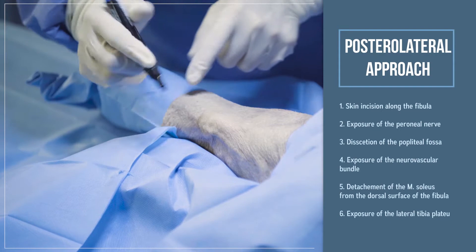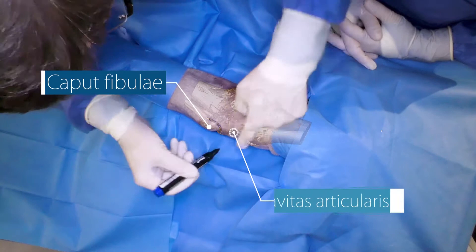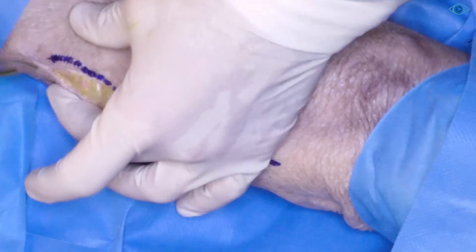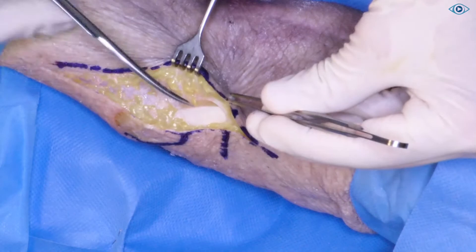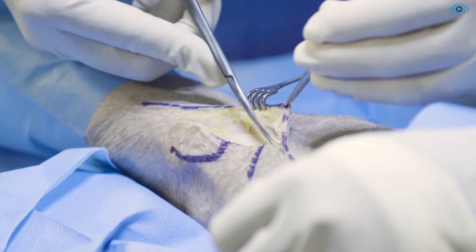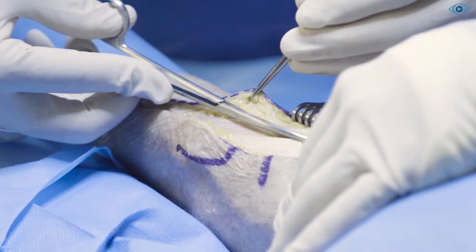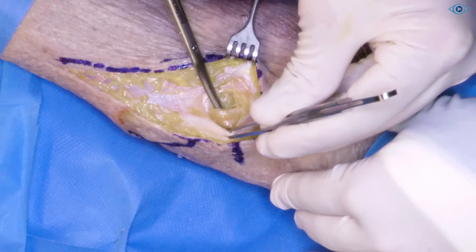Here you see a right knee joint in prone position. Here is the fibula head — I'll roughly mark it — and approximately here is the joint gap at this height. The incision will be directly above the fibula, going till about 10 cm below the head of the fibula. Now we dissect the posterior side of the biceps. You can see the biceps here, the posterior edge. At the right posterior edge of the biceps, we open the fascia, and usually the peroneal nerve appears right here.